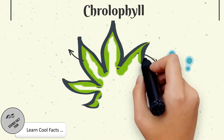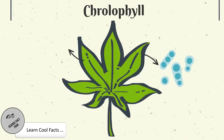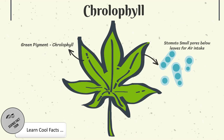Leaves play a major role in a plant's life. Leaves have a special green pigment called chlorophyll, which is the main ingredient for photosynthesis. The green color of leaves is because of this chlorophyll.